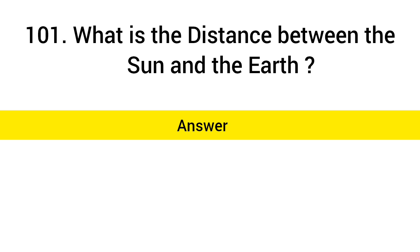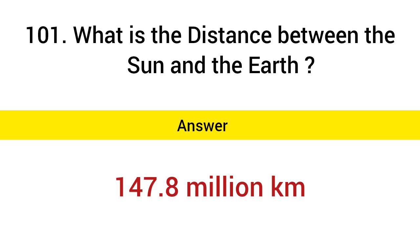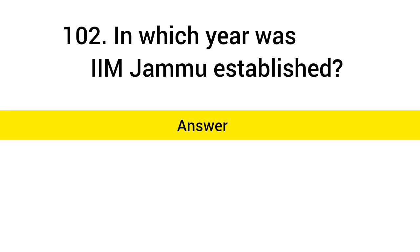What is the distance between the Sun and the Earth? Answer: 147.8 million kilometers. In which year was IIM Jammu established? Answer: 2016.